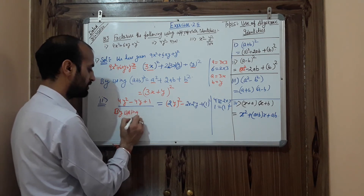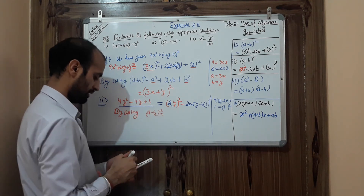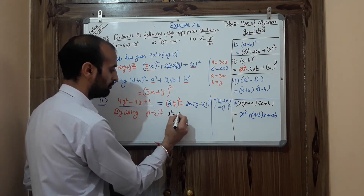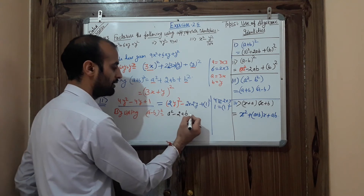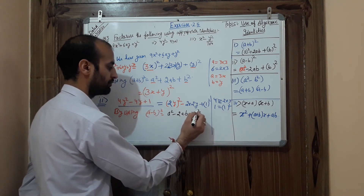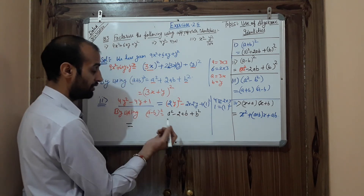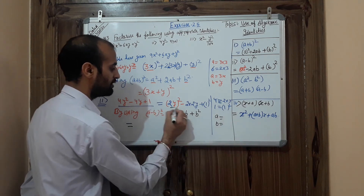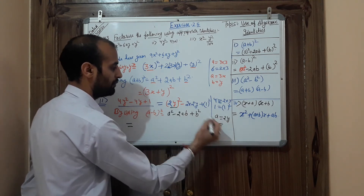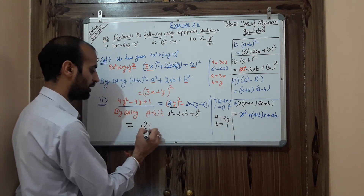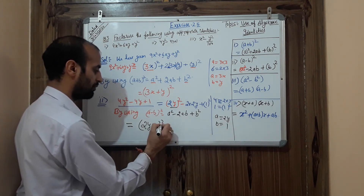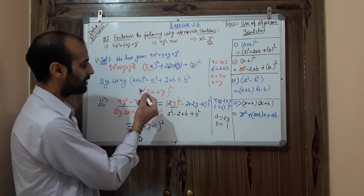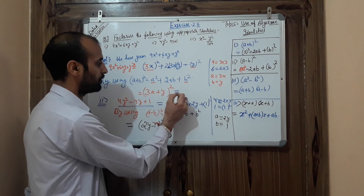By using (a − b)² = a² − 2ab + b², the value of a is 2y and the value of b is 1. So I can write the answer as (2y − 1)². This is the required factorized form.